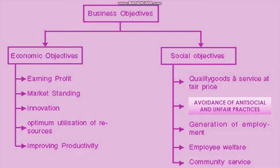Fifth, to improve productivity. So these are the five economic objectives: to earn profit, to withstand in the market, innovative ideas or new techniques, optimum utilization of resources, and to improve productivity.